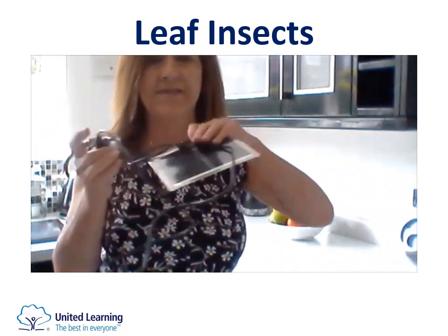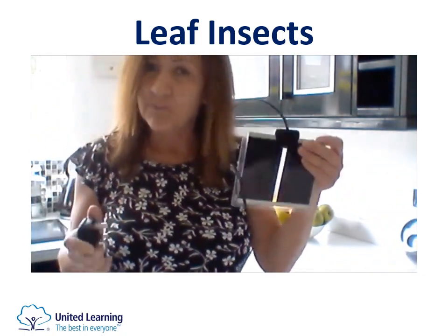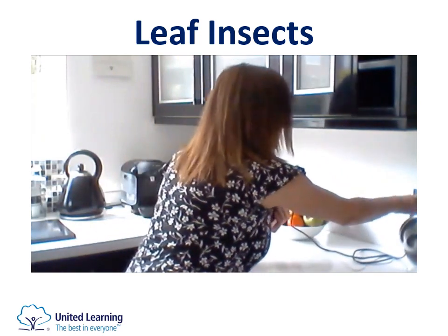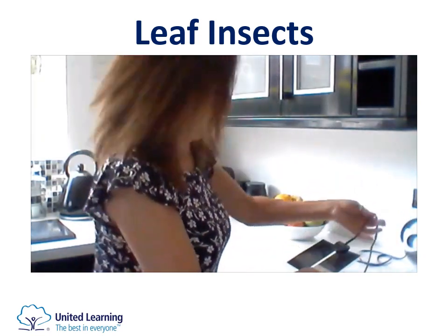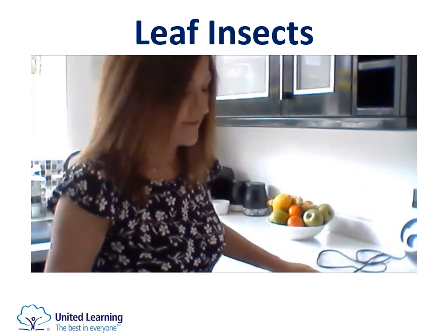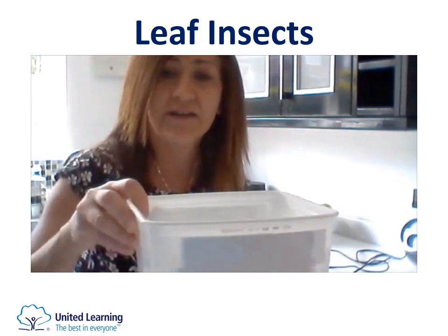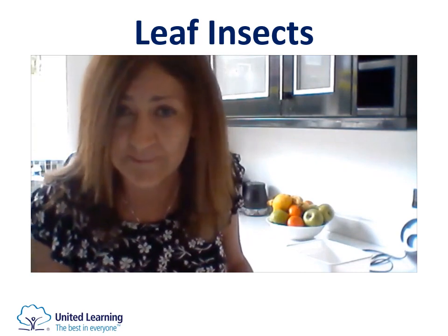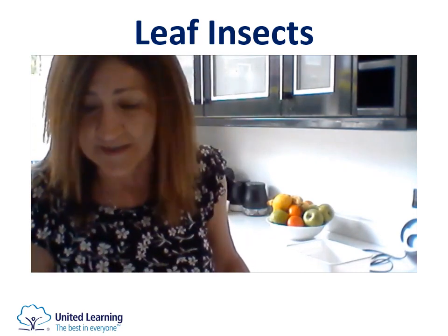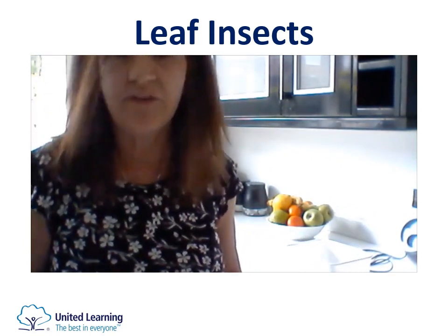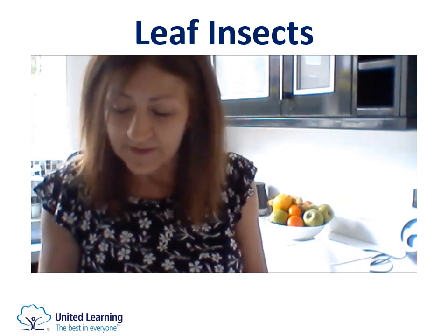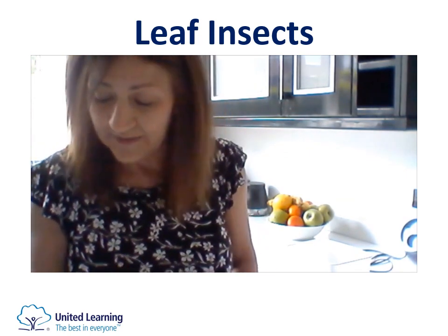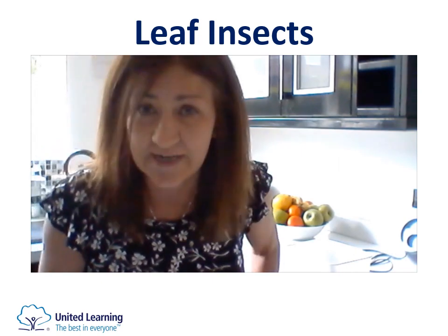To keep them warm I have a heat mat. I'm going to plug this in and the eggs are in — so they sit on the mat to keep it nice and warm at the same temperature all the time. Now they've got the perfect conditions to grow and transform into leaf insects. All they have to do now is keep them moist daily.